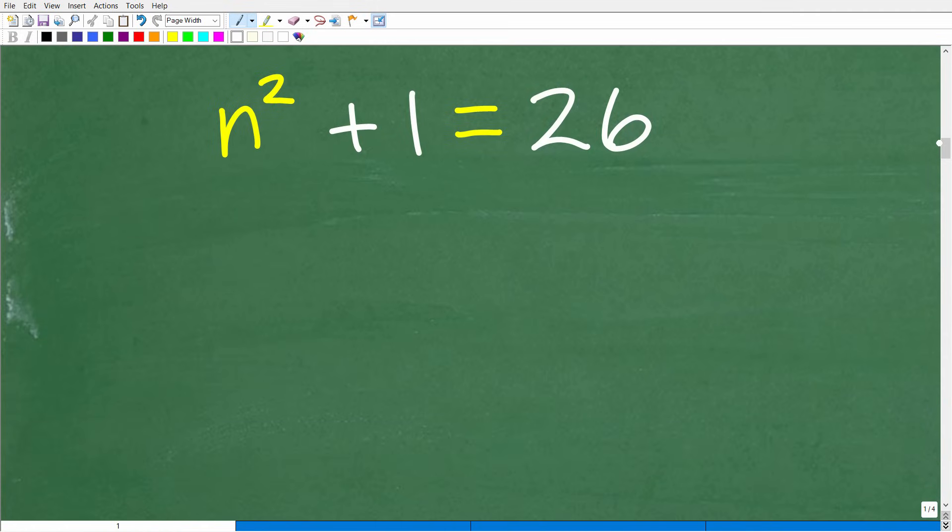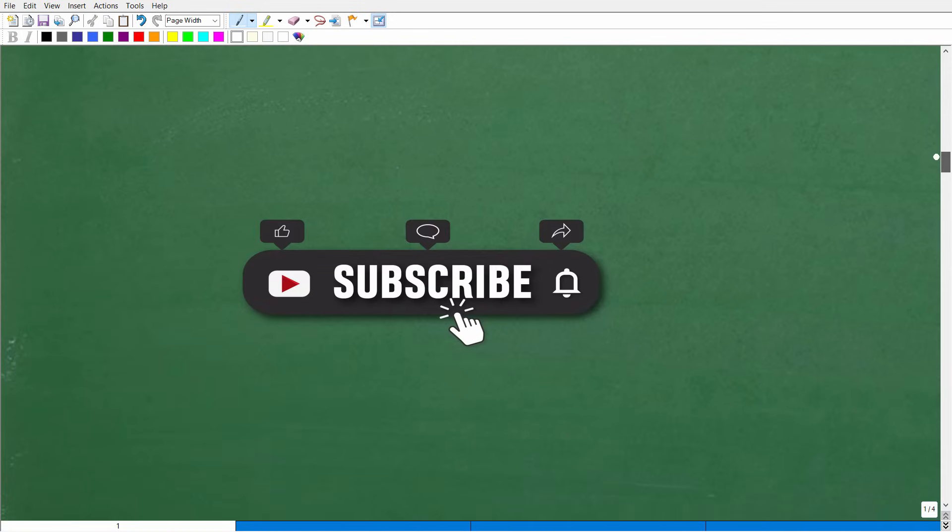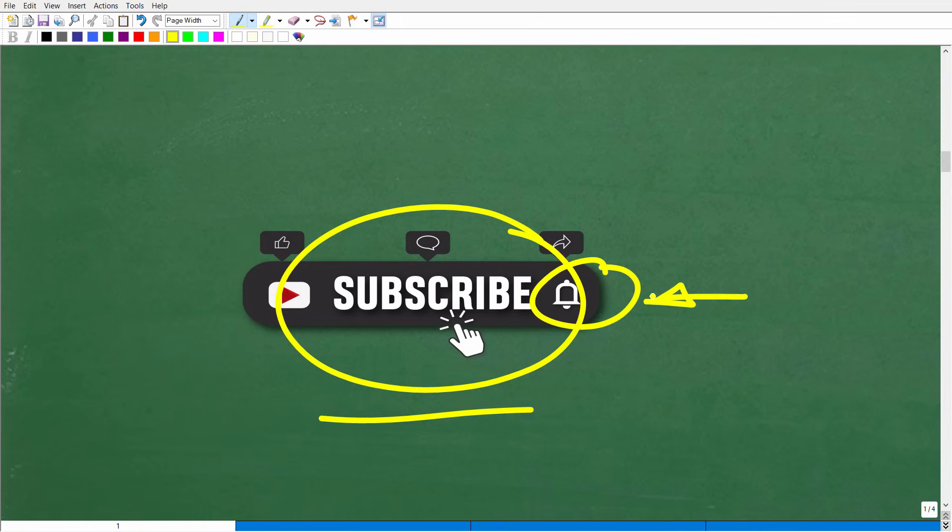First things first, we have n squared plus 1 is equal to 26. When you're solving quadratic equations, there's all sorts of different techniques, but this particular type is very easy. What you want to do is get your n squared on one side of an equation and get your numbers on the other side. Before I do that, I'm going to ask you to find that subscribe button and hit that subscribe button. This really does help me grow my virtual classroom.